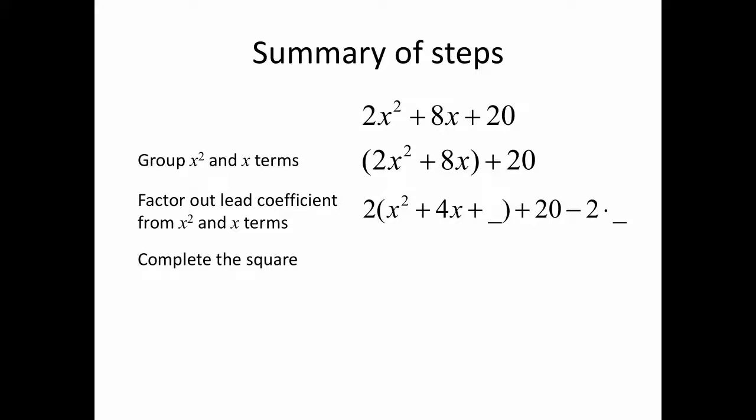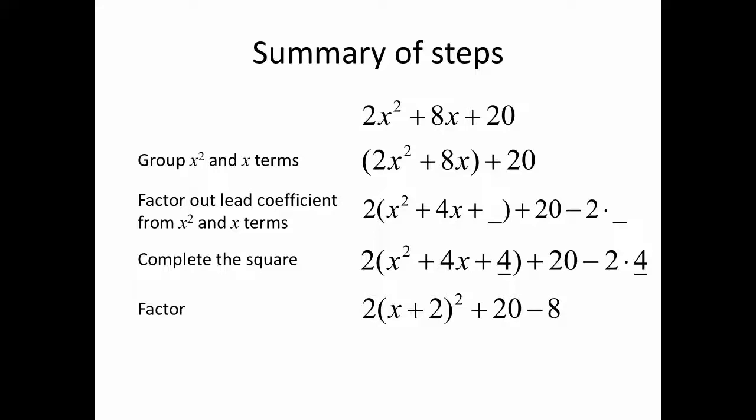Now we're going to complete the square inside by adding 4, and outside we subtract 2 times 4. We factor that perfect square trinomial and simplify the constant term. The final result of completing the square on 2x squared plus 8x plus 20 is 2 times x plus 2 squared plus 12.